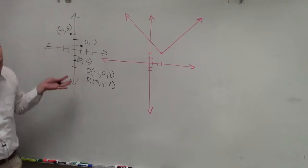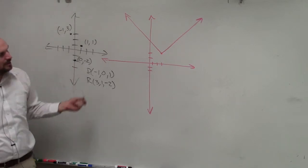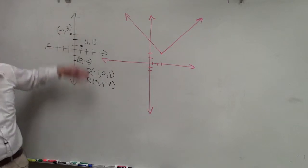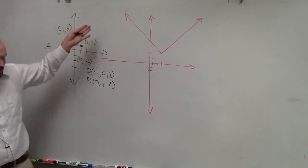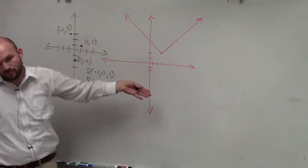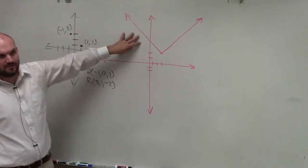So domain and range, when you have points, it's pretty simple. Or when you have a table, it's pretty simple. You just list all the independent, which would be your x values, and your dependent, which would be your y values. However, when you have a graph, we have a different animal.